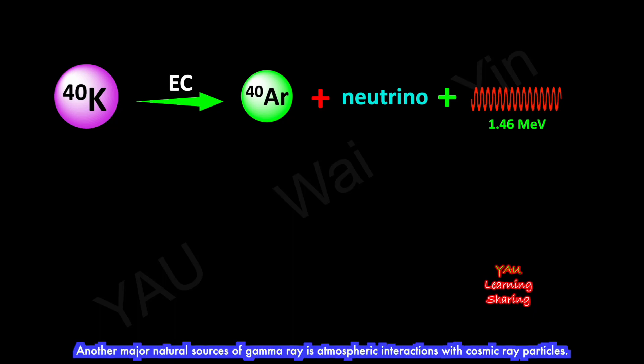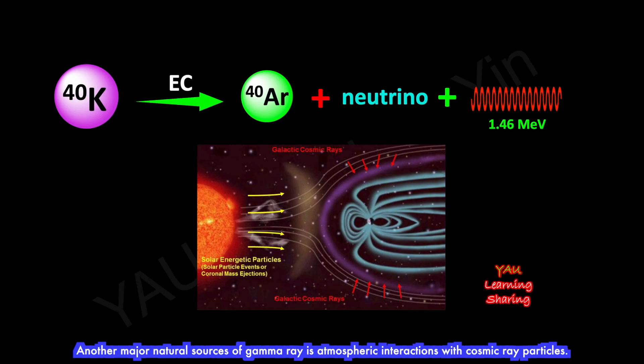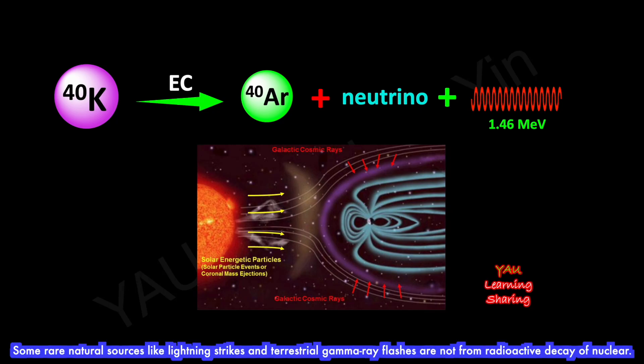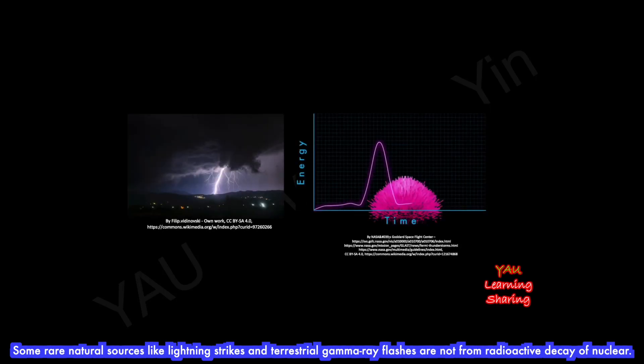Another major natural source of gamma-rays is atmospheric interactions with cosmic ray particles. Some rare natural sources like lightning strikes and terrestrial gamma-ray flashes are not from radioactive decay of nuclei.